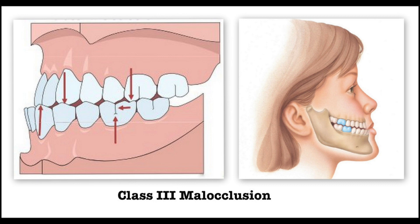Malocclusion is an orthodontist's term for a bite which isn't in the right place. Skeletal 3 malocclusions constitute around 5% of the population in the UK, so it is the rarest malocclusion. We know that Skeletal 3, of all the skeletal malocclusions, has the most genetic component to it.